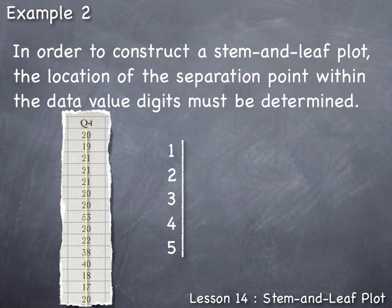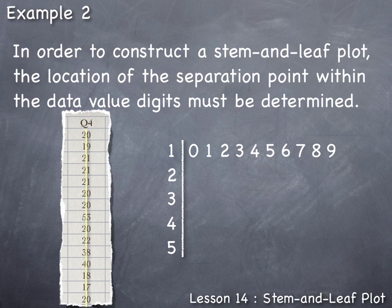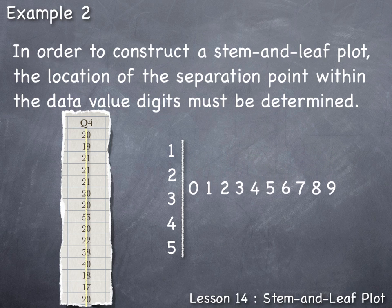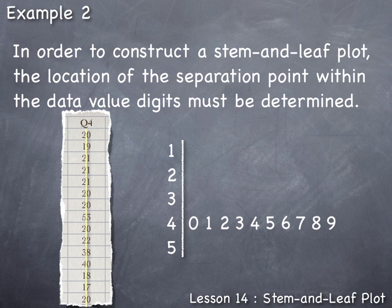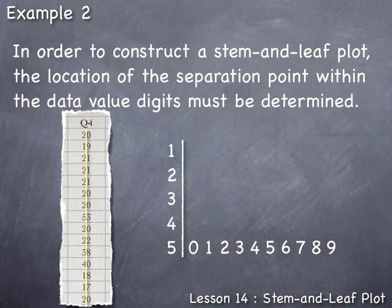When listing each stem value one digit at a time, the remaining 10 digits of the leaves all have to be displayed next to each stem value. Each single stem value can display potentially 10 leaf values — 0 through 9 — depending on whether data values occur in those instances or not.